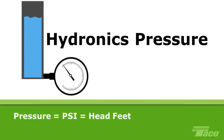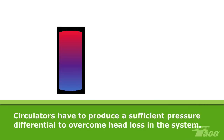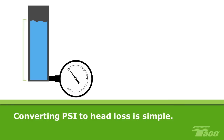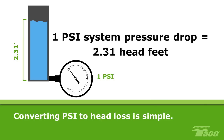Pressure is usually measured in psi, pounds per square inch. But in hydronics, we calculate pressure in terms of head pressure or head loss as measured in head feet. Technically, head is the total mechanical energy content of a fluid at a given point in a piping system. A circulator has to produce a sufficient pressure differential to overcome the pressure or head loss created in the piping by friction and by the various valves and fittings in the system. Converting psi to head loss is very simple: a column of water 2.31 feet or 28 inches high will have a gauge pressure at the bottom of 1 psi. Therefore, 1 psi of pressure drop in a system equals 2.31 feet of head.